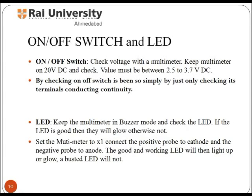To test the on/off switch, check voltage with the multimeter set to 20V DC. The value must be between 2.5 to 3.7V; if the value exceeds that, it means the on/off switch device is faulty. LEDs are used for displays, keypad or display backlighting, and bright white LEDs can also be used as flashlights for mobile phones. To test an LED, keep the multimeter in buzzer mode and check the LED. If the LED is good, it will glow; otherwise it will not.